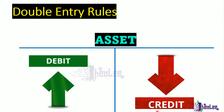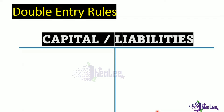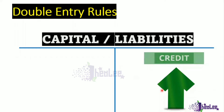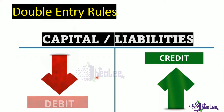Now let us look at the double entry rule for capital and liabilities. Capital and liabilities carry the same rule, and they are opposite to that of assets. If there is an increase in either capital or liabilities, that is a credit entry. And if there is a reduction in capital or liabilities, that carries a debit entry.